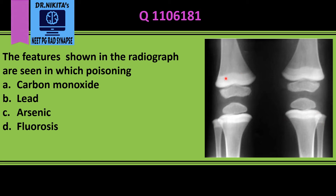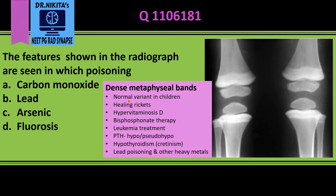Dense metaphyseal bands are seen in lead poisoning. The other causes — the most common being a normal variant in children during growth periods — but in the normal variant, the fibula will not have a dense band. If the fibula has a dense metaphyseal band, it is lead poisoning or plumbism.